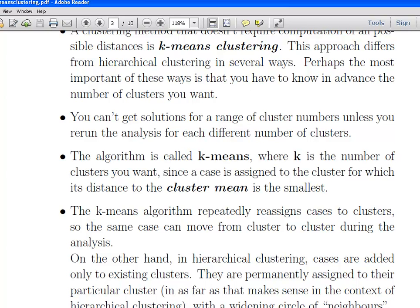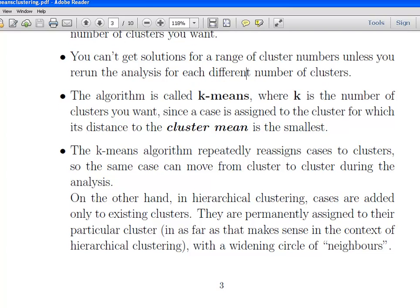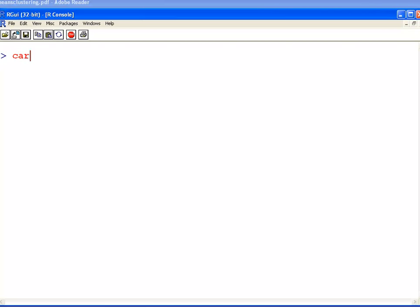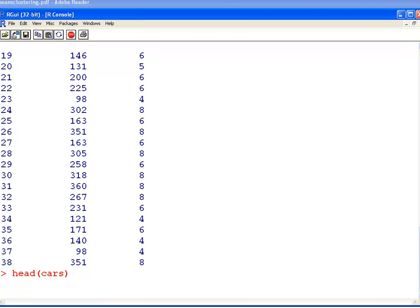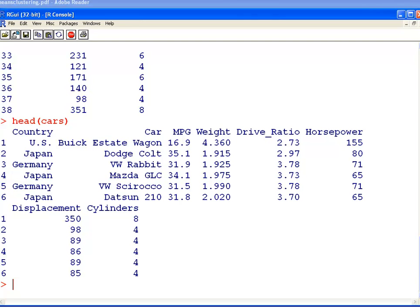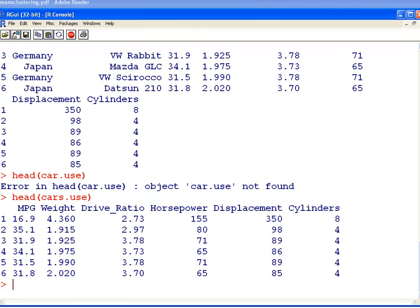Since a case is assigned to a cluster for which its distance to the cluster mean is the smallest, the k-means clustering algorithm repeatedly assigns cases to clusters, so the same case can move from one cluster to another cluster during the analysis. For example, let's actually look at our cars example. I'm going to use this again. This is something I used previously in my hierarchical clustering analysis. The dataset is called cars, and it's 38 cars. I've stripped it down to just the numerical variables.